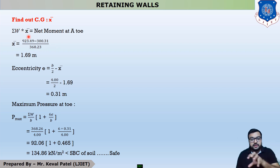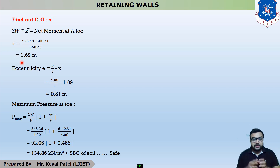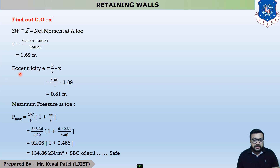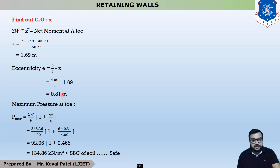Our summation of W is at the denominator part, so the value of X-bar is 1.69 m. Generally, the CG of our cantilever retaining wall should be at 2 m because our base slab is 4 m, but our CG here is at 1.69 m from the lower left corner. There will be some distance, and that distance is called eccentricity. The equation of eccentricity is B/2 minus X-bar, so the difference is 0.31 m. This is the value of eccentricity.